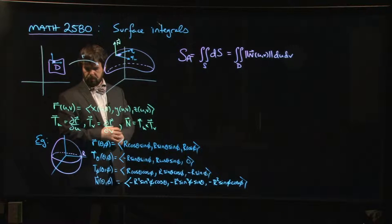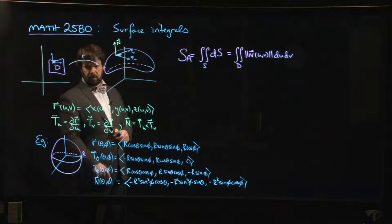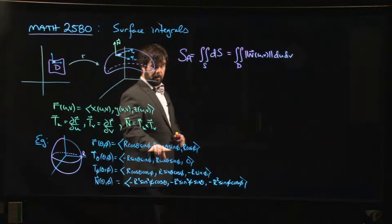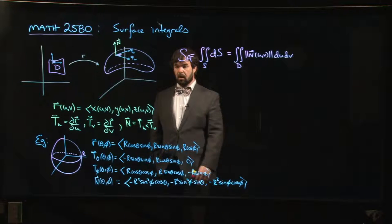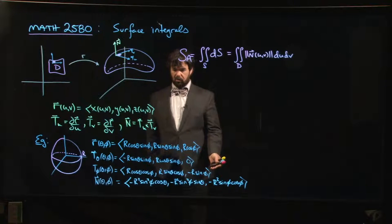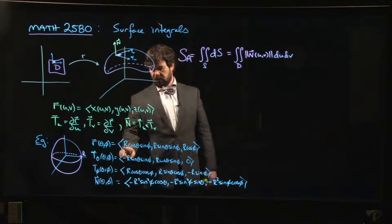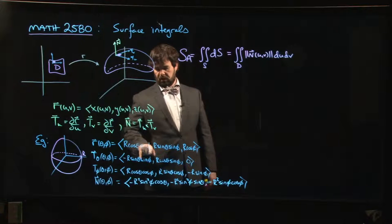So here's our sphere. It's a fixed radius, capital R. We can parameterize using spherical coordinates, right? So we set rho equal to capital R. That gives us the parametrization for the sphere. With rho fixed, our remaining parameters are theta and phi.